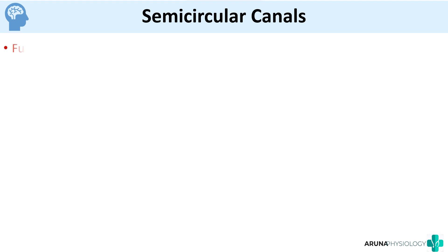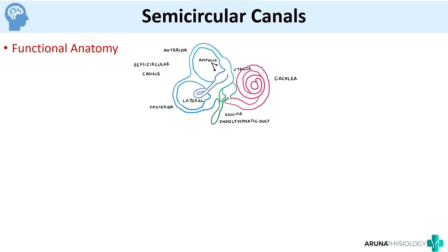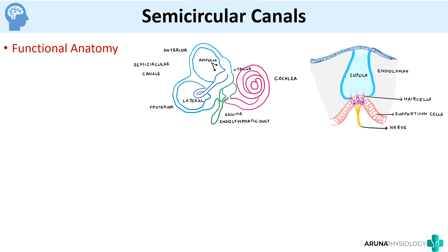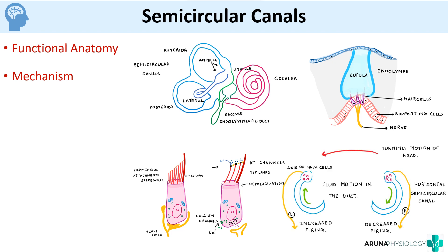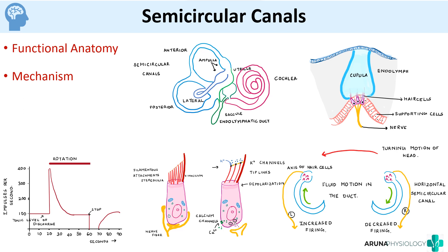To summarize, when writing a short note on semicircular canals: start with functional anatomy including the ampulla and crista ampullaris; mention that hair cells are the receptors; describe the mechanism of hair cell depolarization; explain how semicircular canals function during angular acceleration; draw the graph showing impulse generation at the peaks of rotation; describe the functions including the role of crista ampullaris in day-to-day life; and include the applied aspect of BPPV.